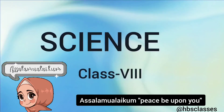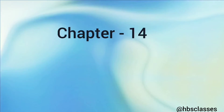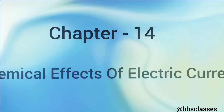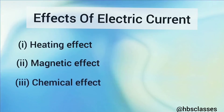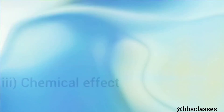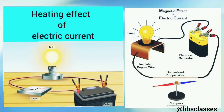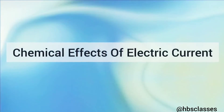Welcome to science class. Today we will continue Chapter 14 of your science book: Chemical Effects of Electric Current. An electric current can produce the following effects: heating effect, magnetic effect, and chemical effect. In Class 7 you studied the heating and magnetic effects. Now let us study the chemical effects of electric current. Electric current can bring about chemical changes, so it is said to have a chemical effect.